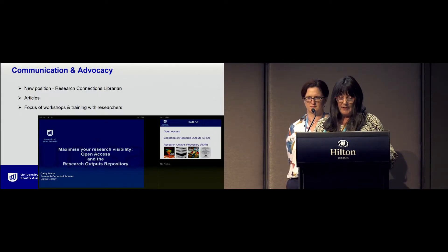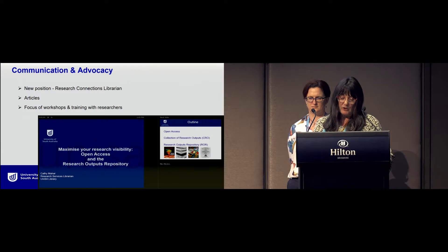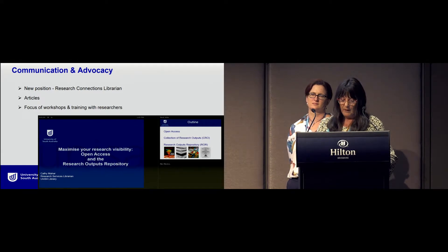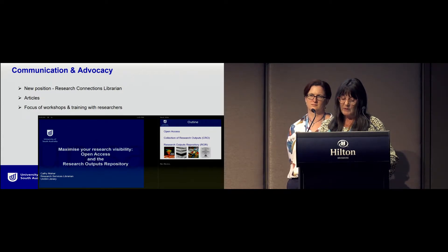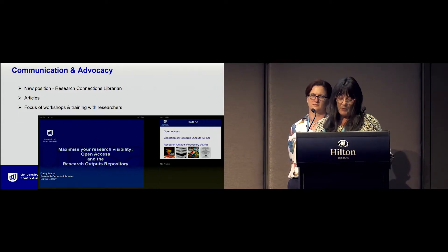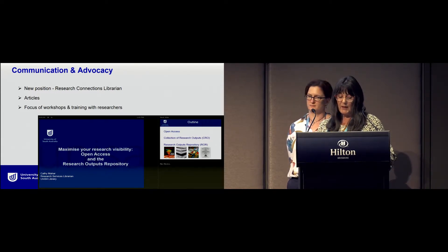We needed to educate our academics and researchers in order to achieve all this. Through our communication and advocacy efforts, we appointed a research connections librarian, who has been quite crucial in advocating open access, with core responsibilities to design, market and lead targeted services such as researcher IDs and open access compliance to support the research priorities of the university. In their role, they work closely with repository staff and academic librarians within the library, and with researchers and other units such as the business intelligence and planning unit.